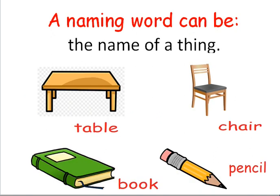A naming word or noun can be the name of a thing. For example, table, chair, book, and pencil. These words name the things and are all nouns or naming words.